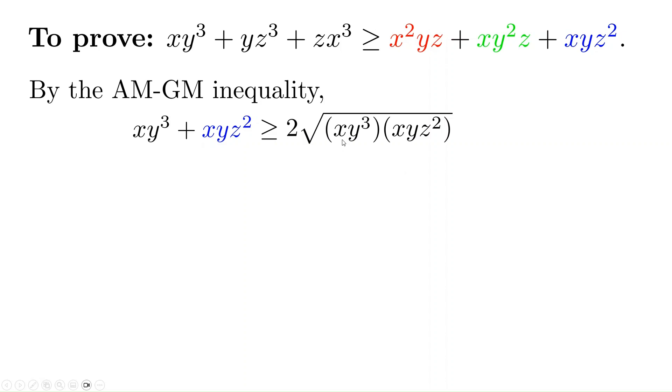The product is xy³ times xyz², that's x²y⁴z². Taking square root: x² gives x, y⁴ gives y², z² gives z. So we have 2xy²z, which is the green term on the right side.